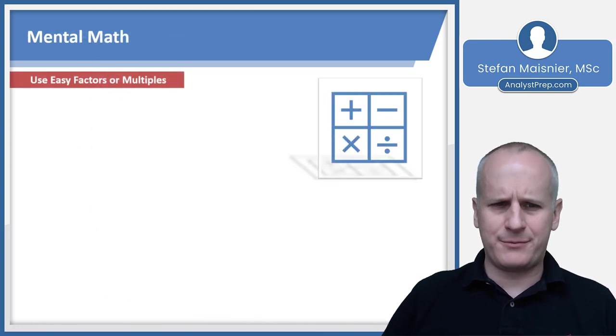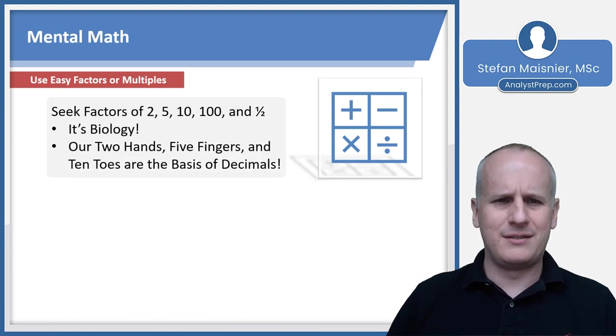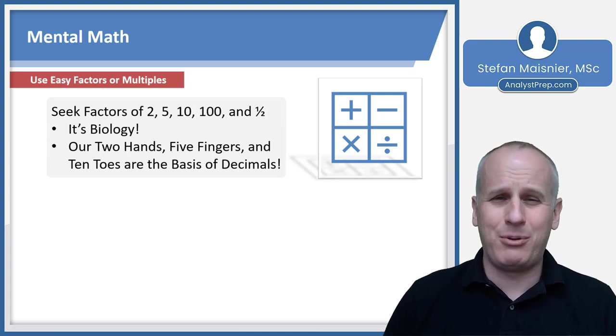So how do we manage mental math and manual calculation? Well, first, we want to use easy factors or multiples. And those are going to be factors of 2, 5, 10, 100 and a half. You may have thought to yourself, yeah, I can usually halve things, double things relatively easily, divide by 5, divide by 10. And why is that? Well, it's our biology. We've got two hands, five fingers and ten toes. And that is the basis of decimal math. That's why our brains are just able to do that math more natively and naturally.